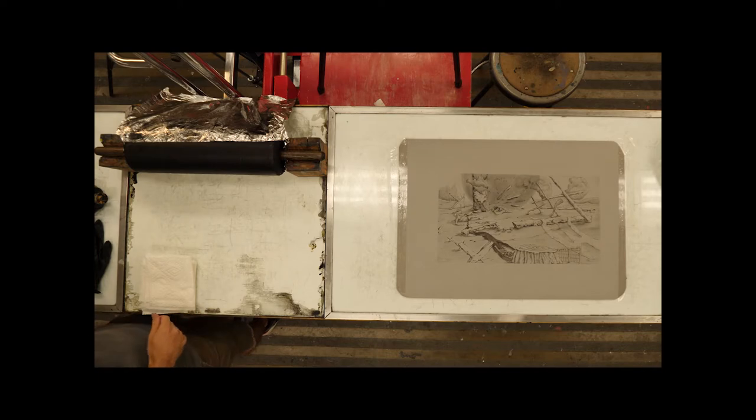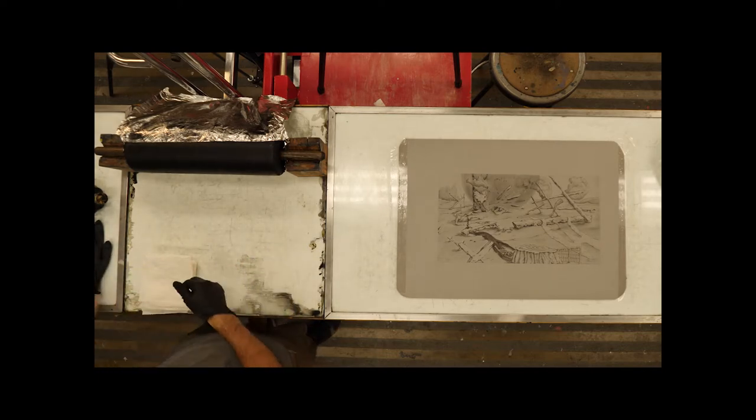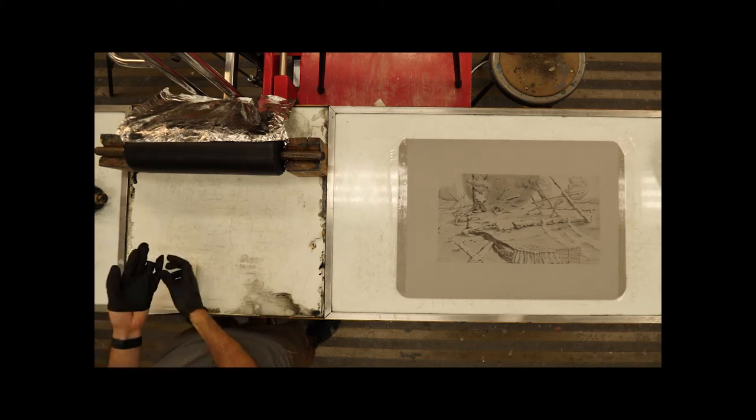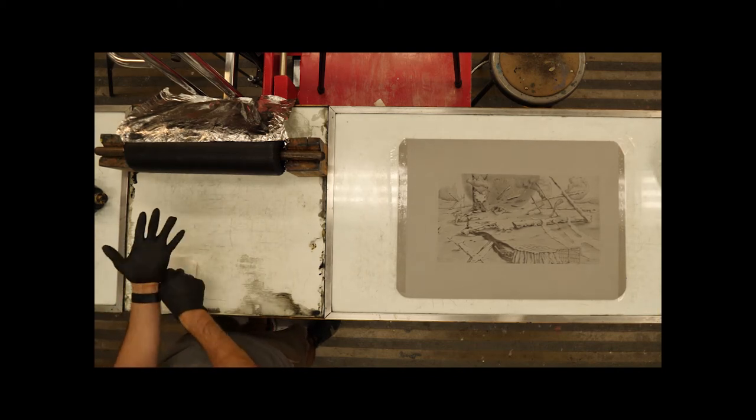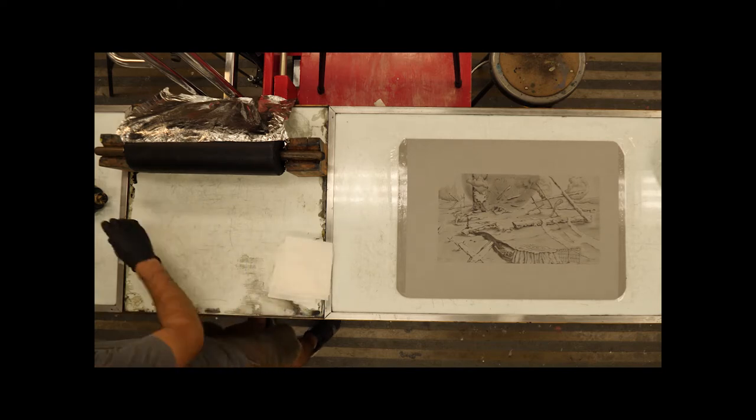First off, what we're going to be doing here is we need to make space, make sure the plate is taped down, and make sure we have space for the roller and for the ink slab that we're going to be putting down.